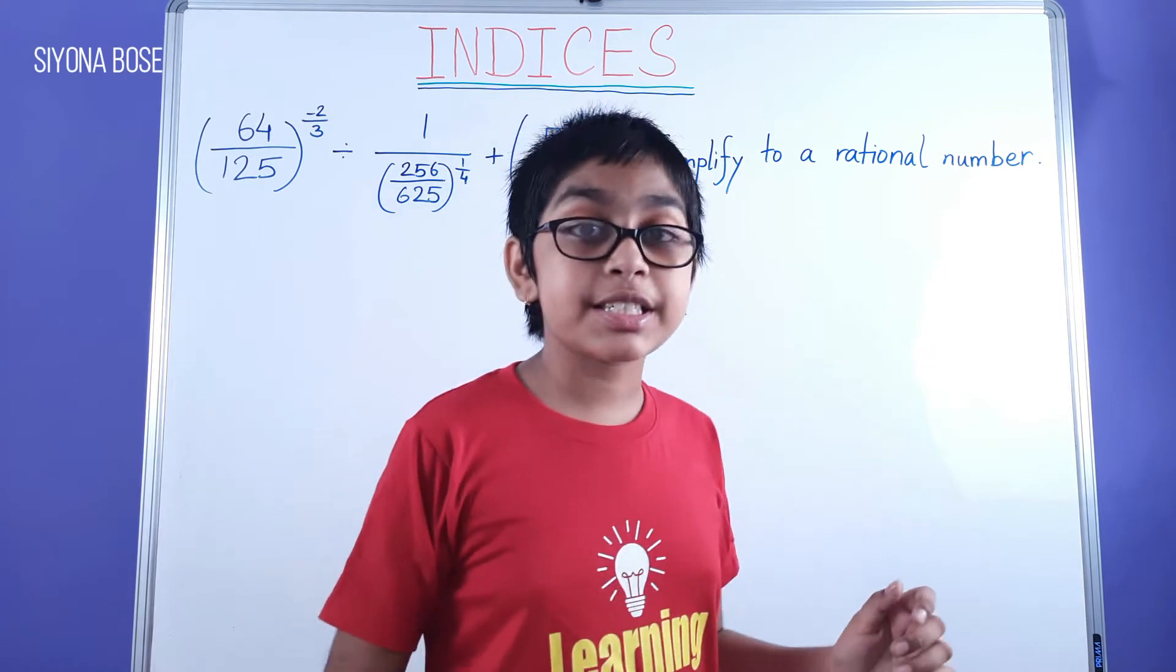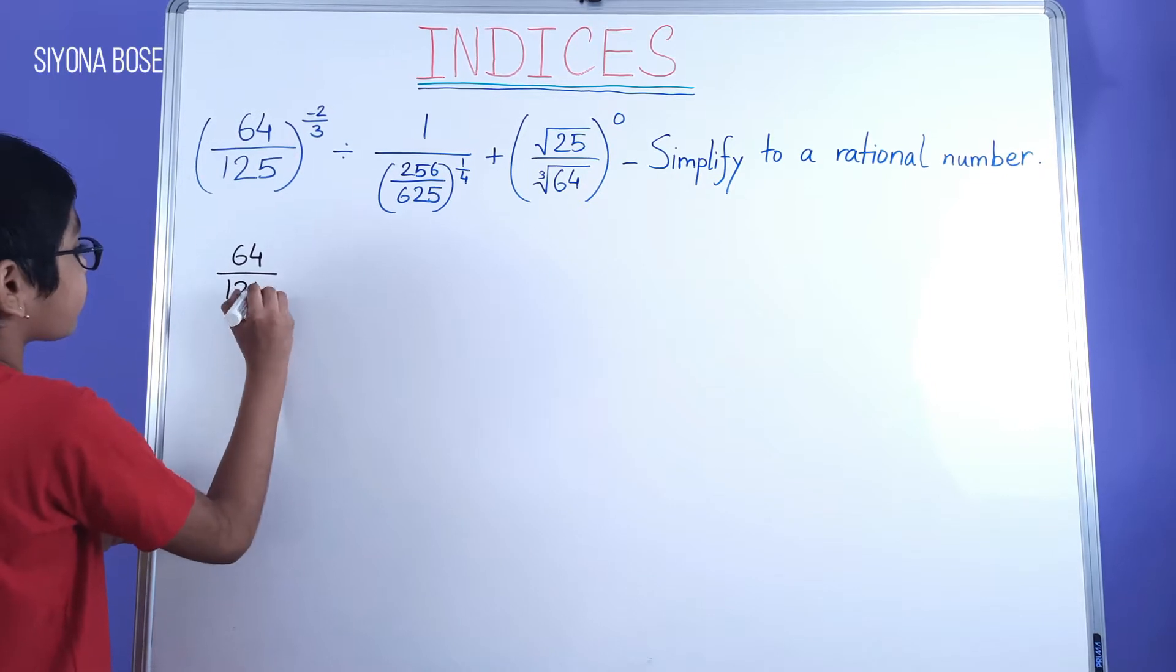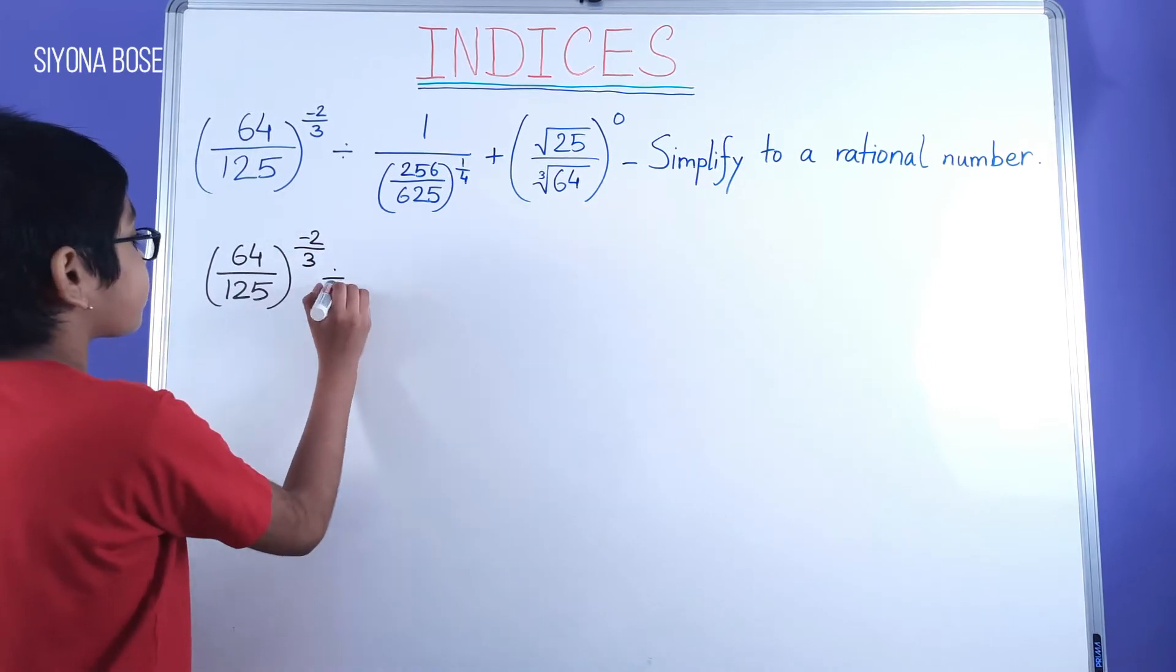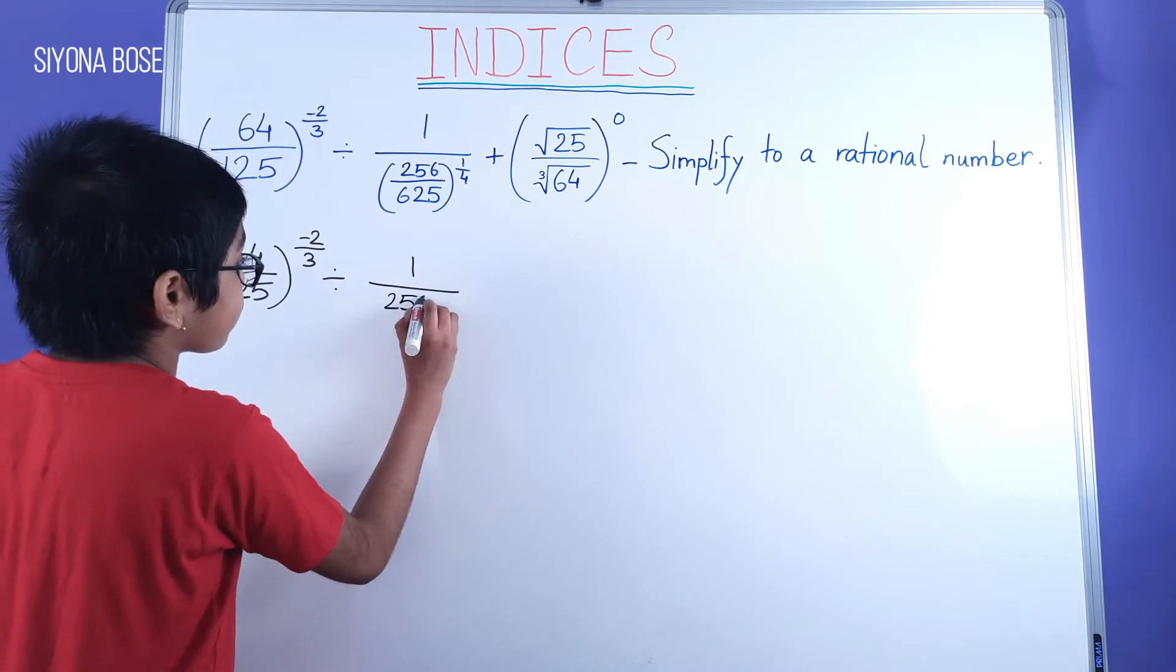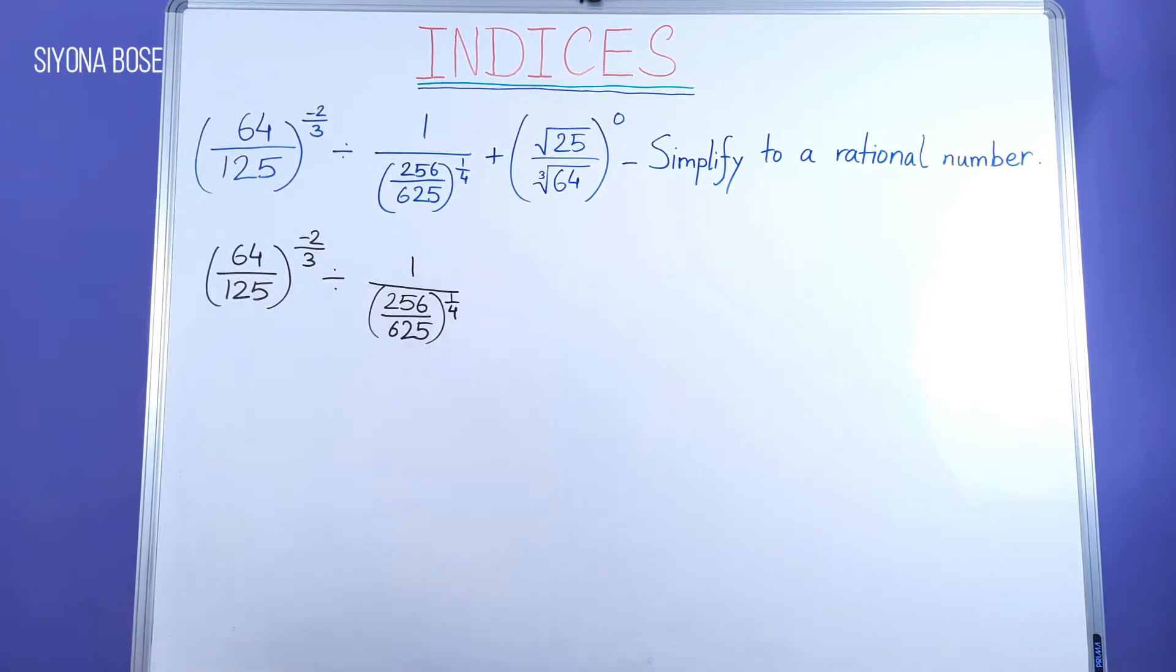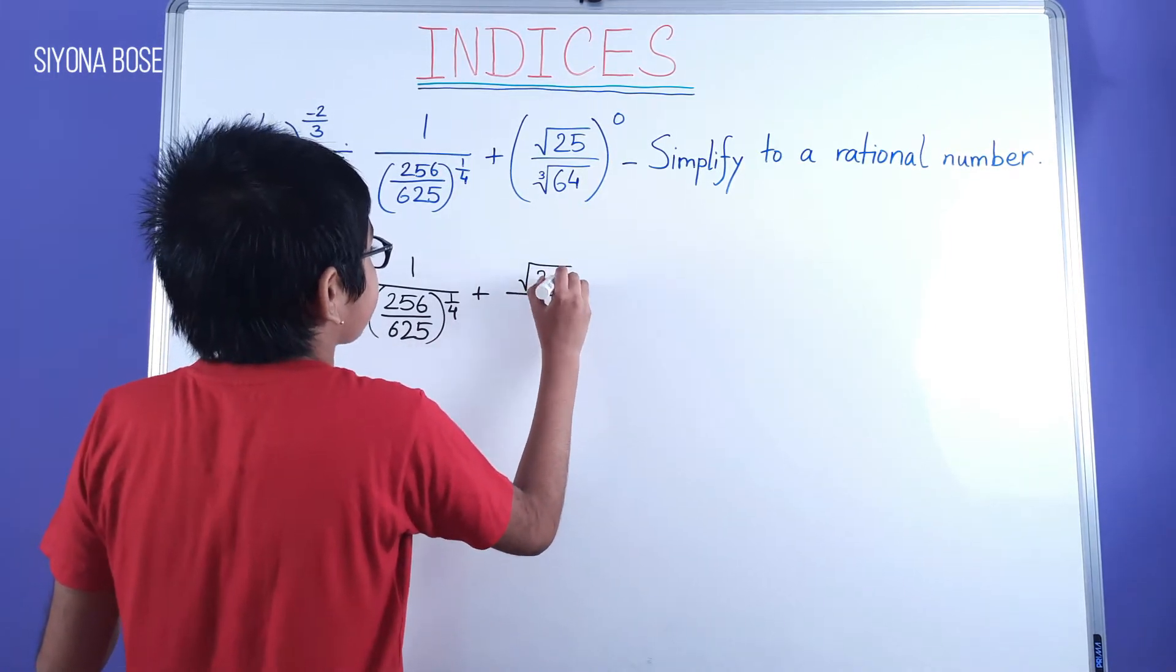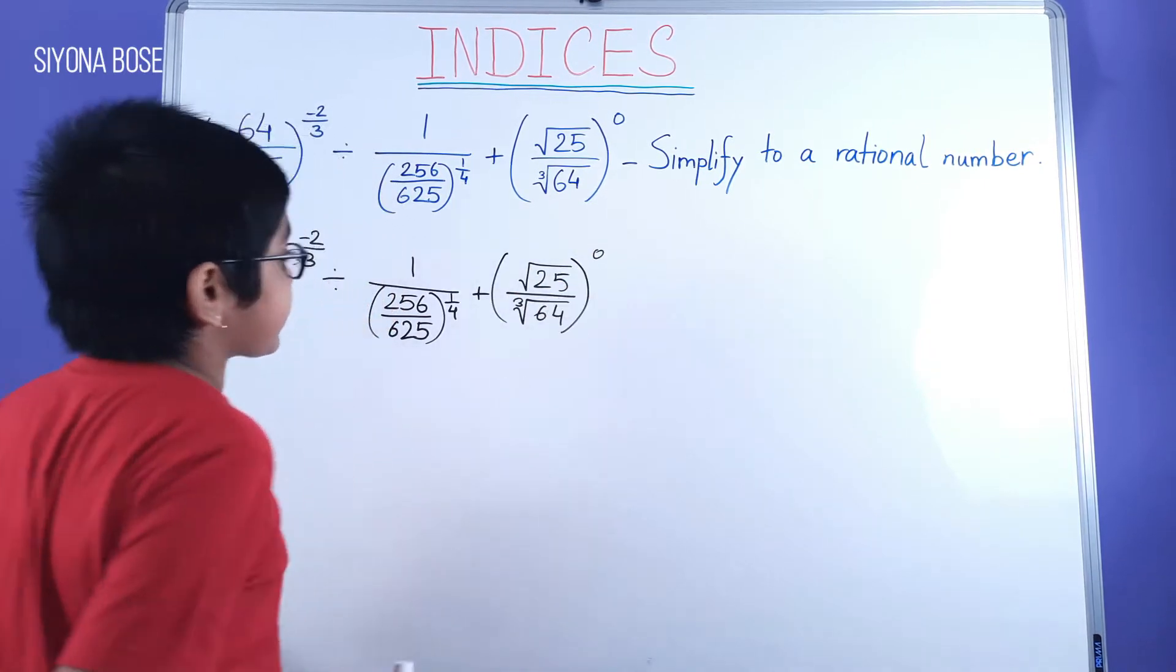Copying down the sum first. 625, hold the power of 1 by 4, plus root over 25 by cube root of 64, hold the power of 0.